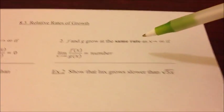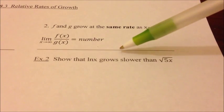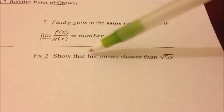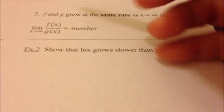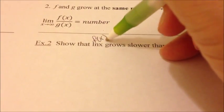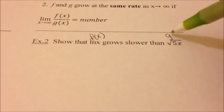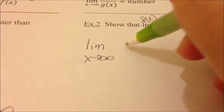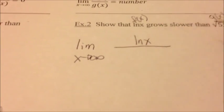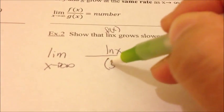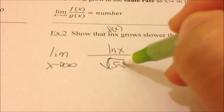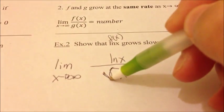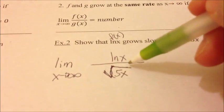Example 2 says show that ln(x) grows slower than √(5x). I'm going to consider ln(x) as f(x) and √(5x) as g(x). We write the limit as x approaches infinity with ln(x) on top and √(5x) on the bottom. Here's a trick: when you have a radical, taking derivatives leads to a chain rule that won't reduce the problem — it goes in a cycle and you can't make progress.